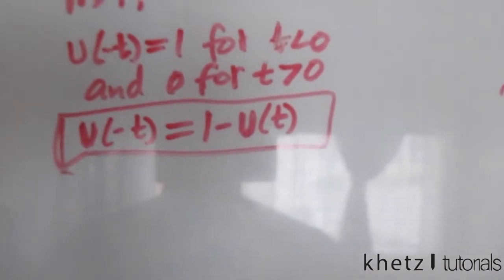For t greater than zero we use the step response analysis. The response is of the standard form. Since the voltage across the capacitor cannot change abruptly, v just before zero equals v just after zero, so our initial condition is v(0) = 20 volts.